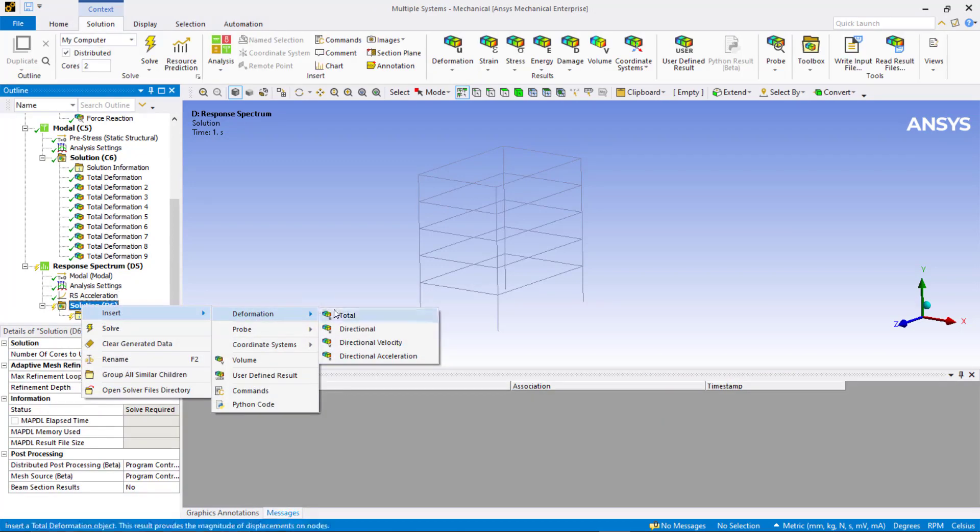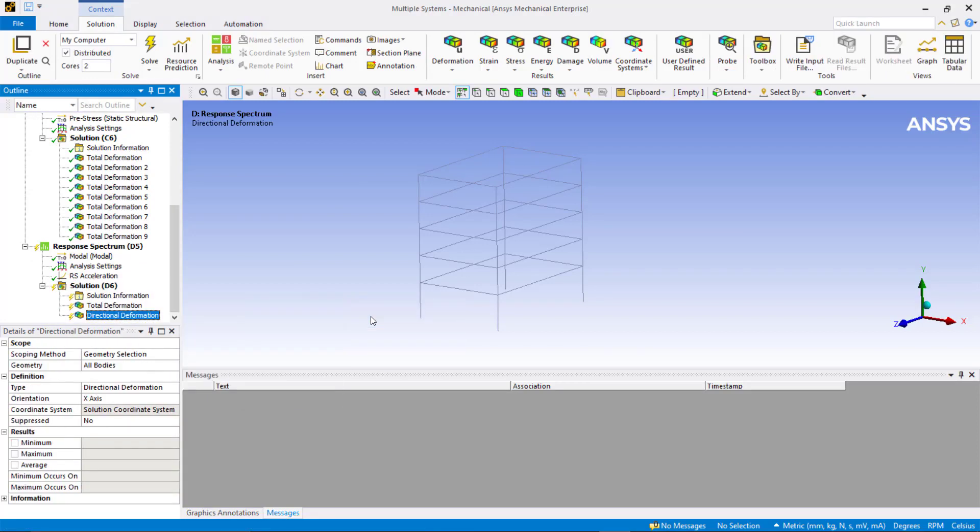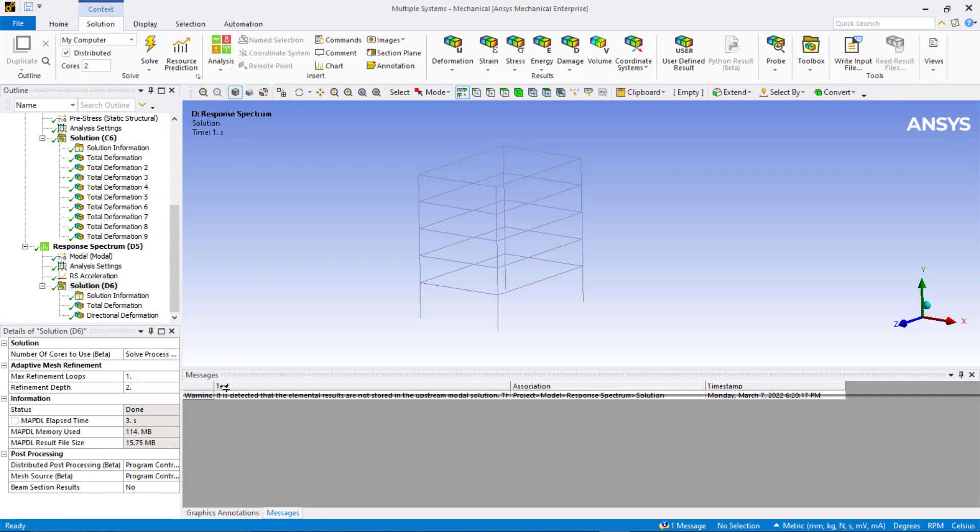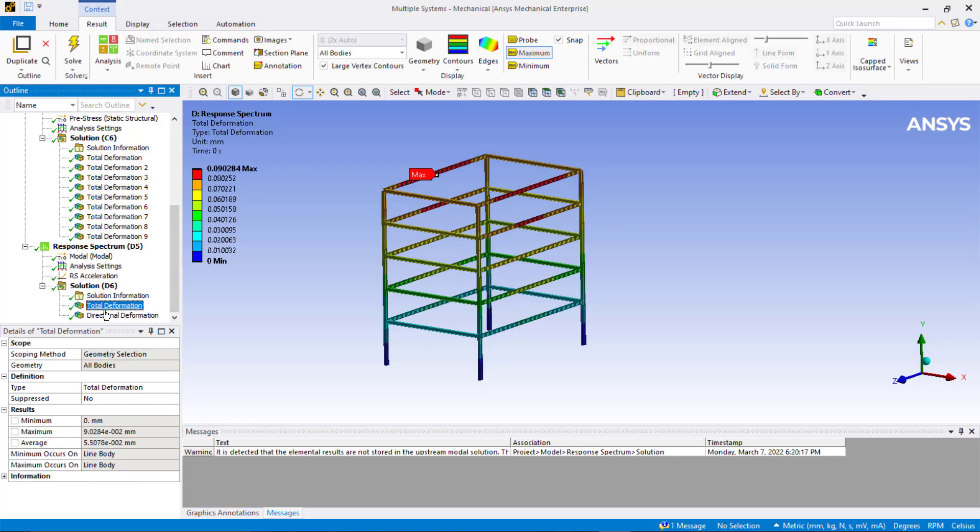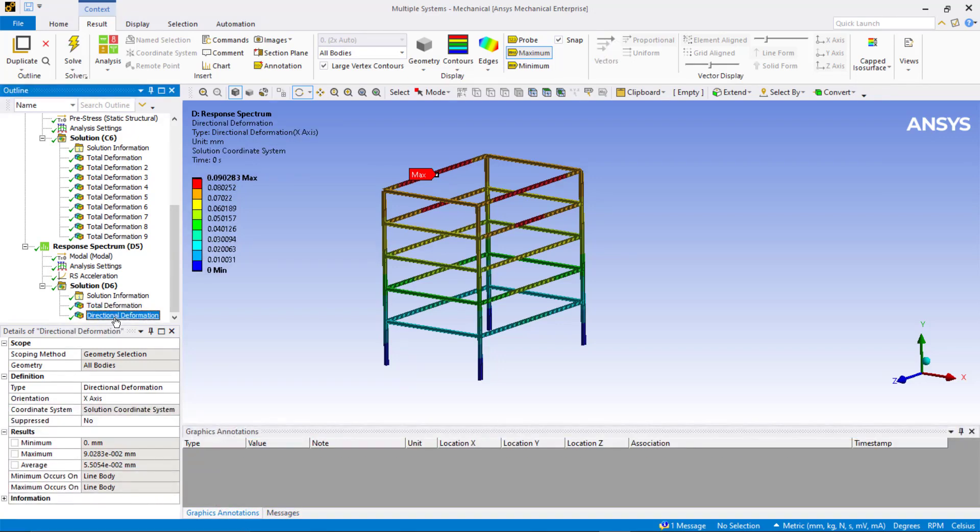Under solution branch, to post-process maximum displacement resulting from this excitation, insert total deformation and directional deformation orientation in X axis. Note there is no actual deformed shape available as this is just a quick calculation to approximate peak results from the mode shapes and response spectra input that was provided.